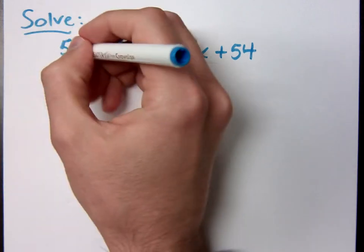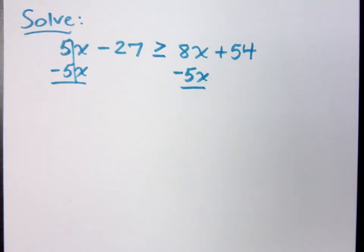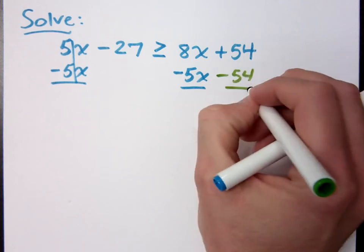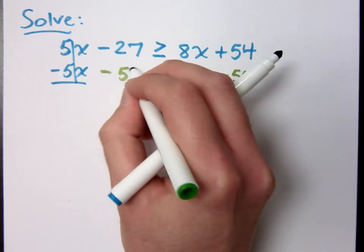So if I'm moving the variables to the right, that means I have to do what? Constants to the left, so minus 54, minus 54.